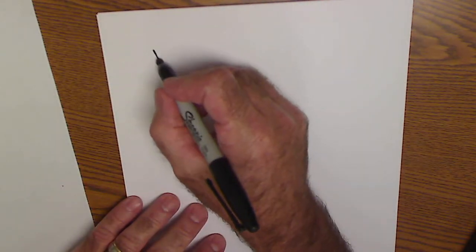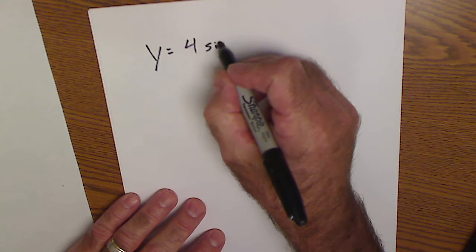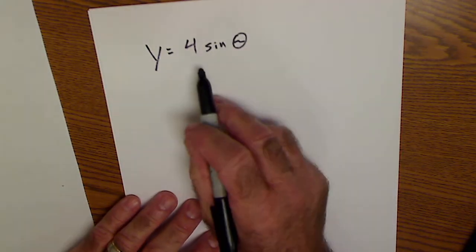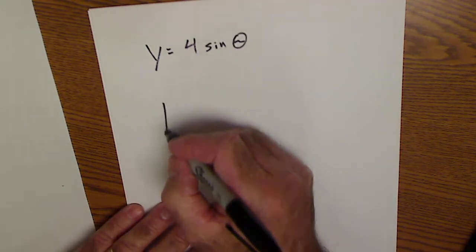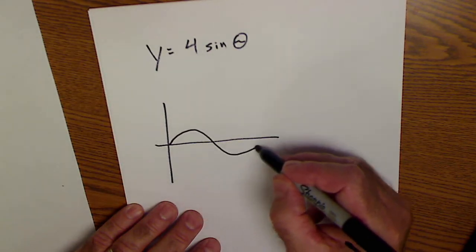The first one, let's say y is equal to 4 sine of theta. So that has an amplitude of 4. It's a regular sine graph that cycles in 360.